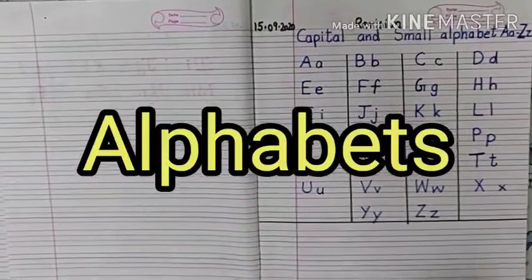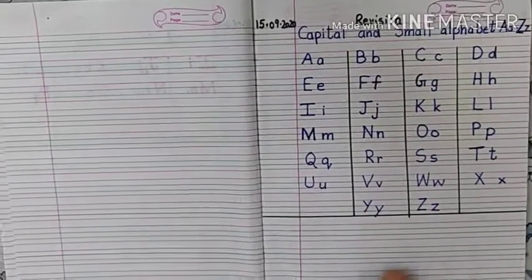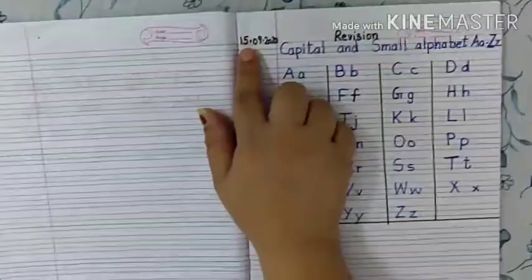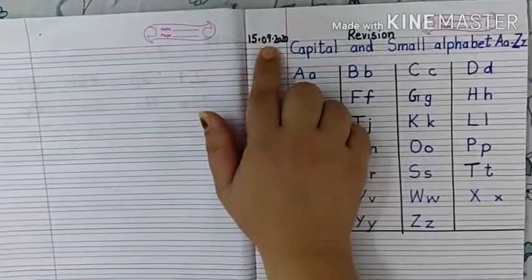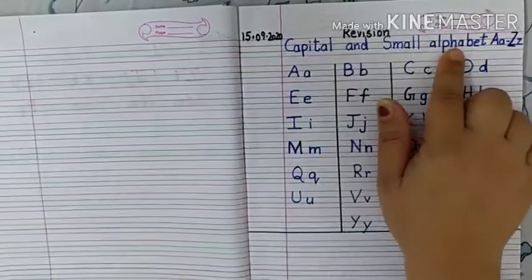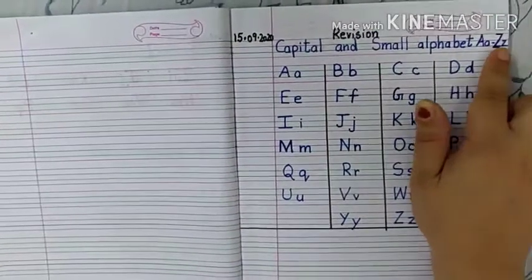Good morning children, first open your English notebook. Open your English notebook and first write down the date here, 15 September 2020. We will do revision of capital and small alphabet A to Z and their sounds.